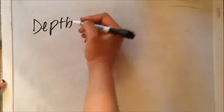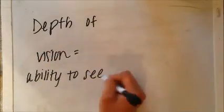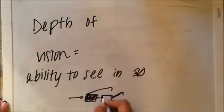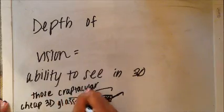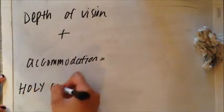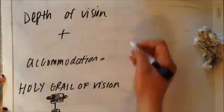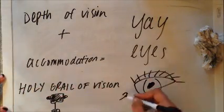But why don't we look fatter when we are closer to you? The answer, depth of vision. So we already know that our eyes accommodate to view an object based on its distance. Depth of vision is the ability to see stuff in three dimensions. Depth of vision plus accommodation helps us judge distance and relative size.